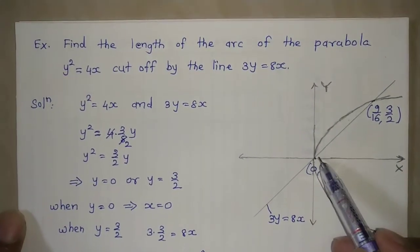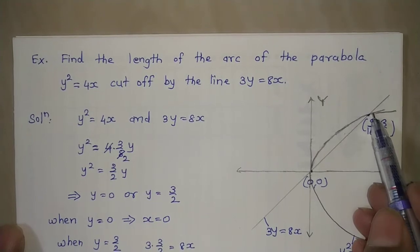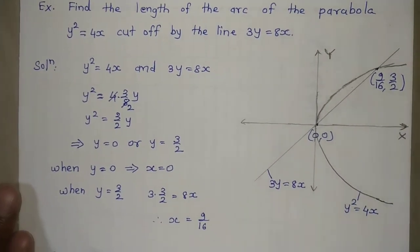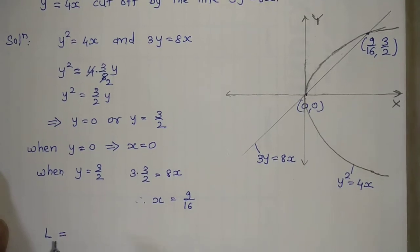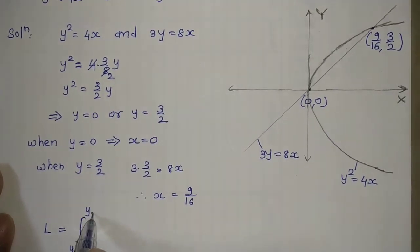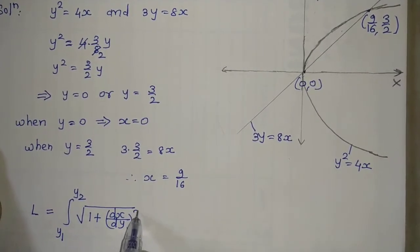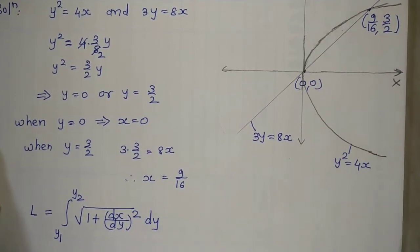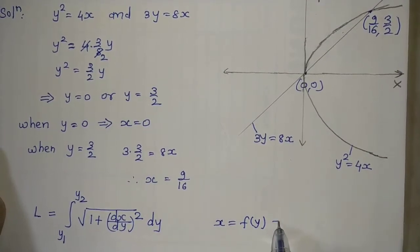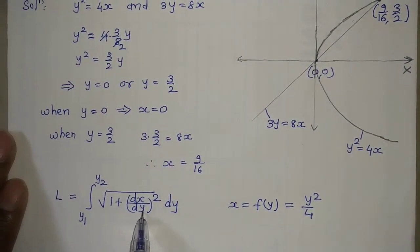We need the length of the arc of the parabola from one point of intersection to the other. The points of intersection are important because they define the limits of integration. Let L denote the required arc length. The formula is L = ∫[y₁ to y₂] √(1 + (dx/dy)²) dy. In this example, x is treated as a function of y, that is x = y²/4.